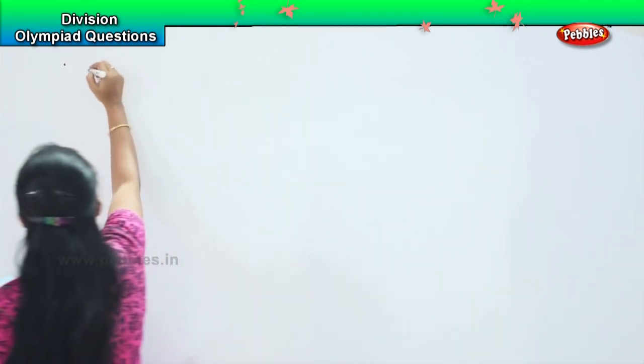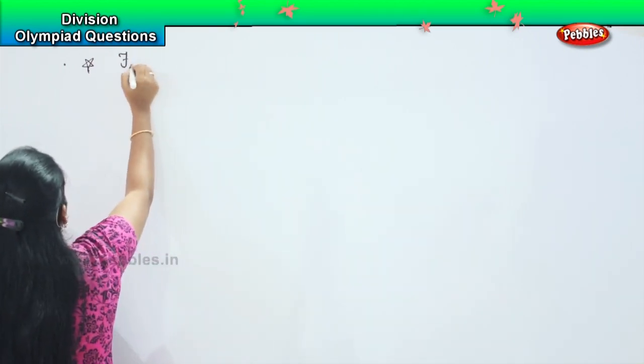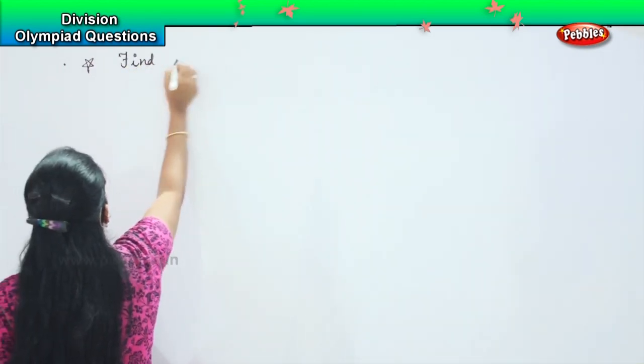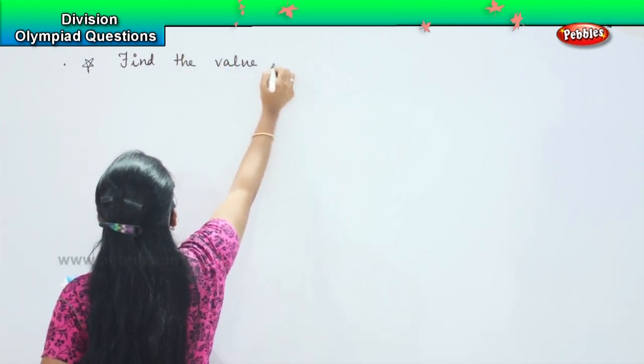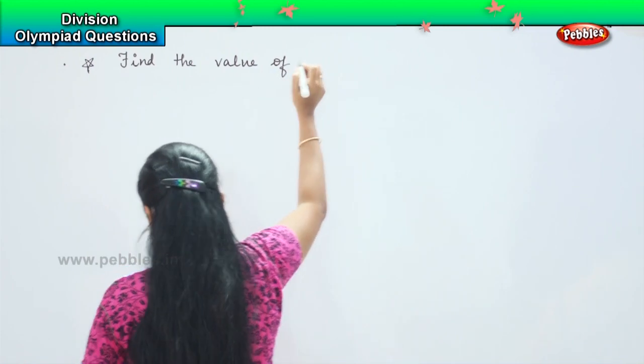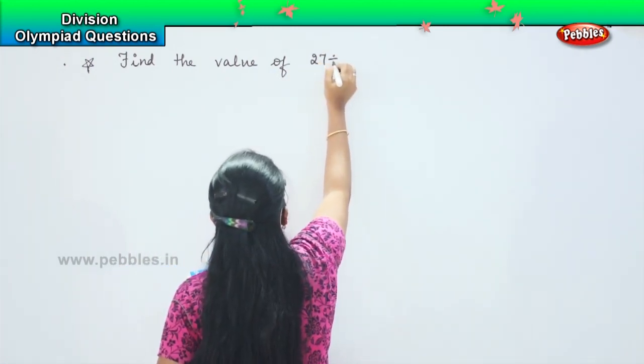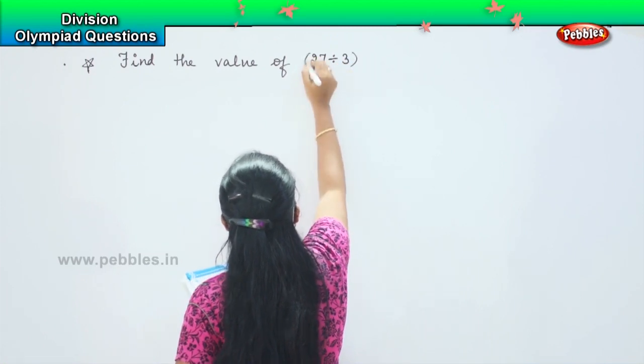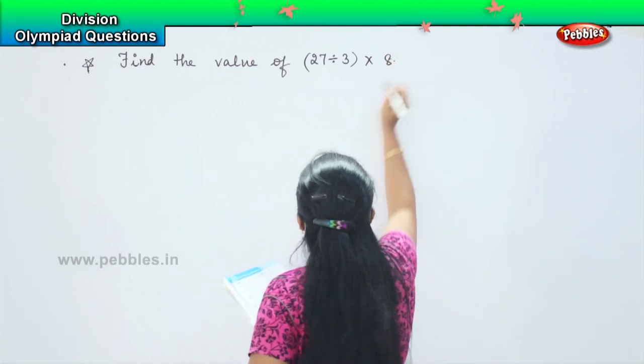So ready for the next sum? Here is your next question. The next question says find the value of 27 divided by 3 into 8.